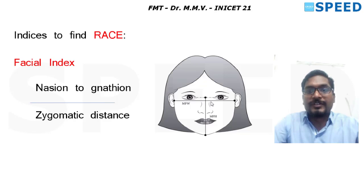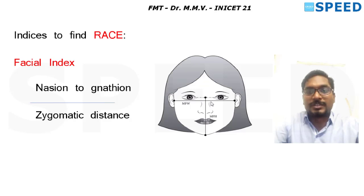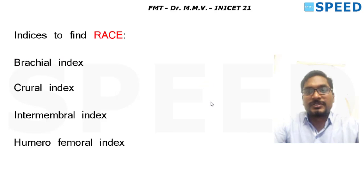The second index to find race is the facial index. It is calculated as the maximal distance from nasion to gnathion (chin) divided by zygomatic distance, which is the maximal facial width.